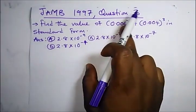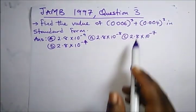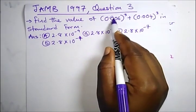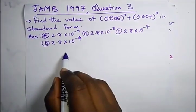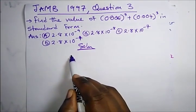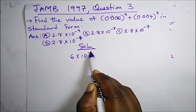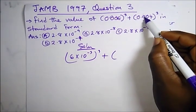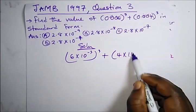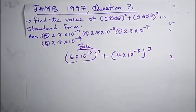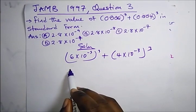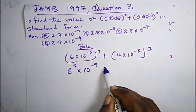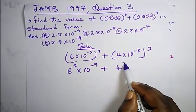Our final question is from JAMB 1997, question 3. It says: find the value of this expression in standard form, which involves terms raised to the power 3. Shifting the decimal three places gives (6 × 10⁻³)³ + (4 × 10⁻³)³. The cube distributes: 6³ × 10^(−9) + 4³ × 10^(−9).